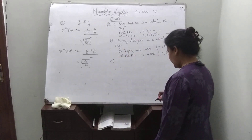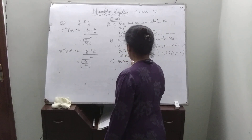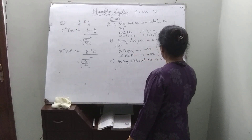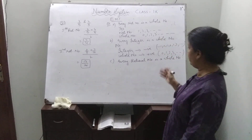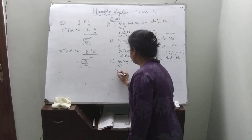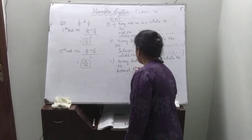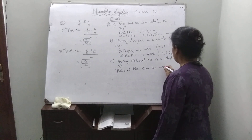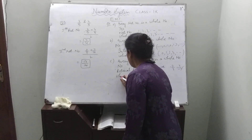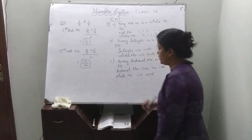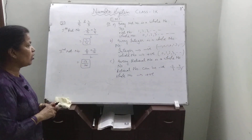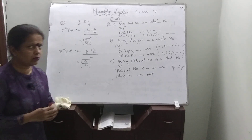Part C — every rational number is a whole number? No. Because rational numbers can be negative also, like minus 2 by 3, 4 upon minus 7 and so on. But whole numbers are always positive numbers including 0. So rational numbers are not always whole numbers. That's all for today.